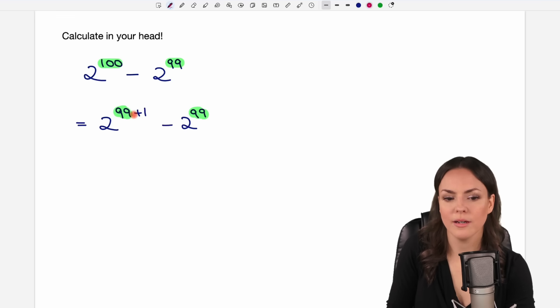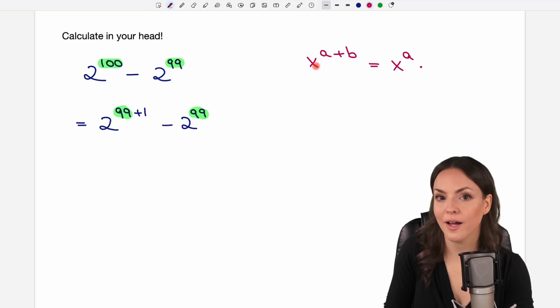If you have a sum in your exponent, so let's say something like x to the power of a plus b, then the rule says you can write this as two separate powers. You take your base x to the power of the first part of the sum, so to the power of a, and multiply this by your base and raise this to the power of the second part of the sum, so to the power of b.